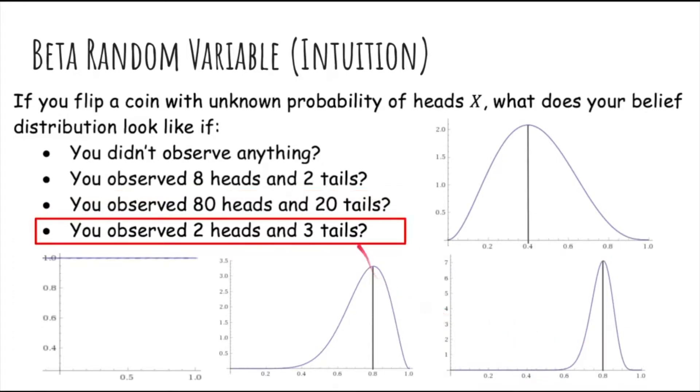What about 2 heads and 3 tails? Again, you'd expect it to be about 2 over 5, but in this case, we've only observed 5 flips, so really the probability of heads could be almost anywhere, so this distribution might be better.